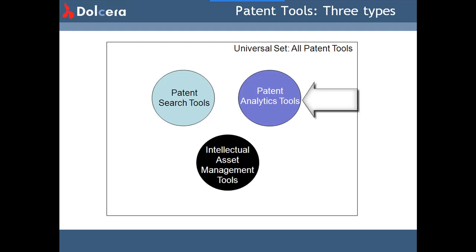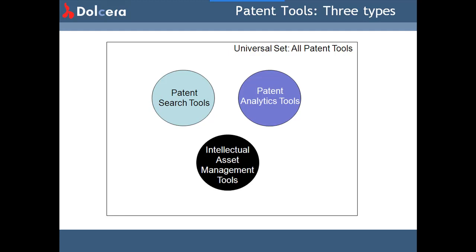In the Patent Analytics Tools category, we have desktop tools like Vantage Point, and online tools such as Aureka, Inography, and Patent Insight Pro. In the Intellectual Asset Management Systems category, we have Foundation IP, IP Master, Anaqua, and many others.